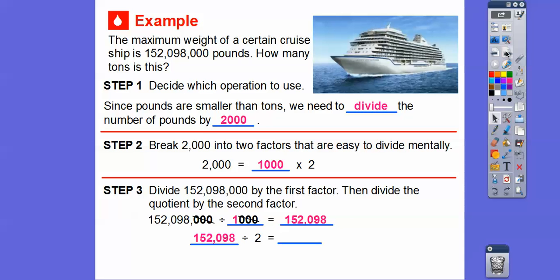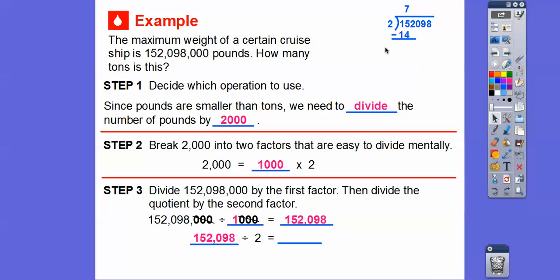So now we're going to take this 152,098, and we're going to divide that by 2, okay? So let's go ahead, and I'll do this right up here, 152,098 divided by 2. Now, the reason why I'm doing this is there's a zero in here, and I just don't want you to lose the zero.